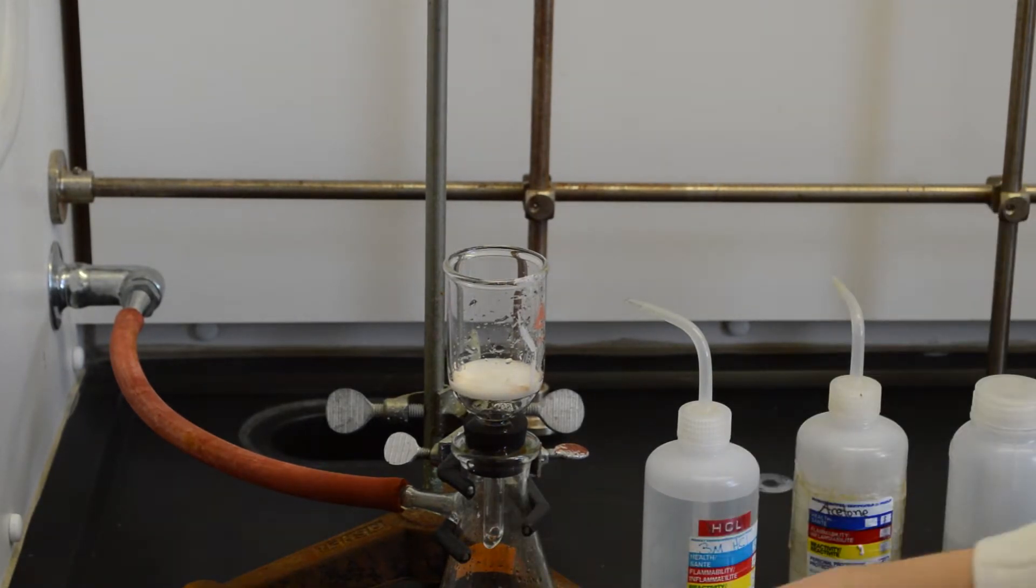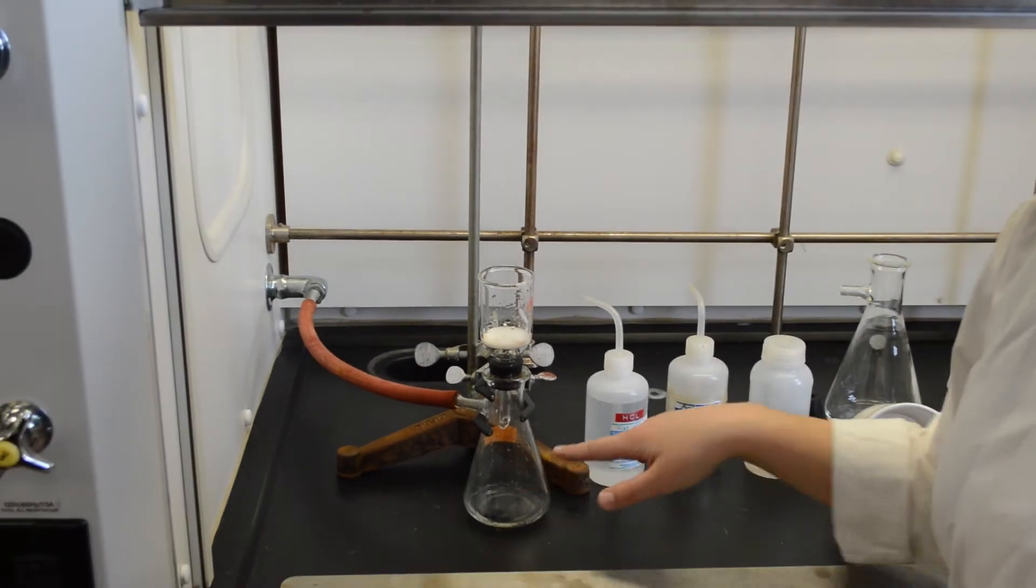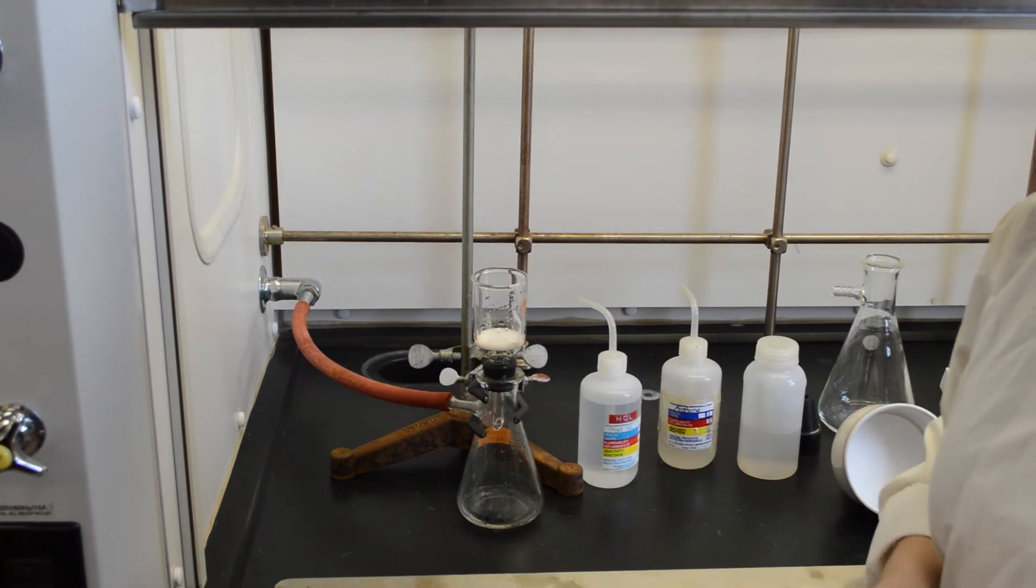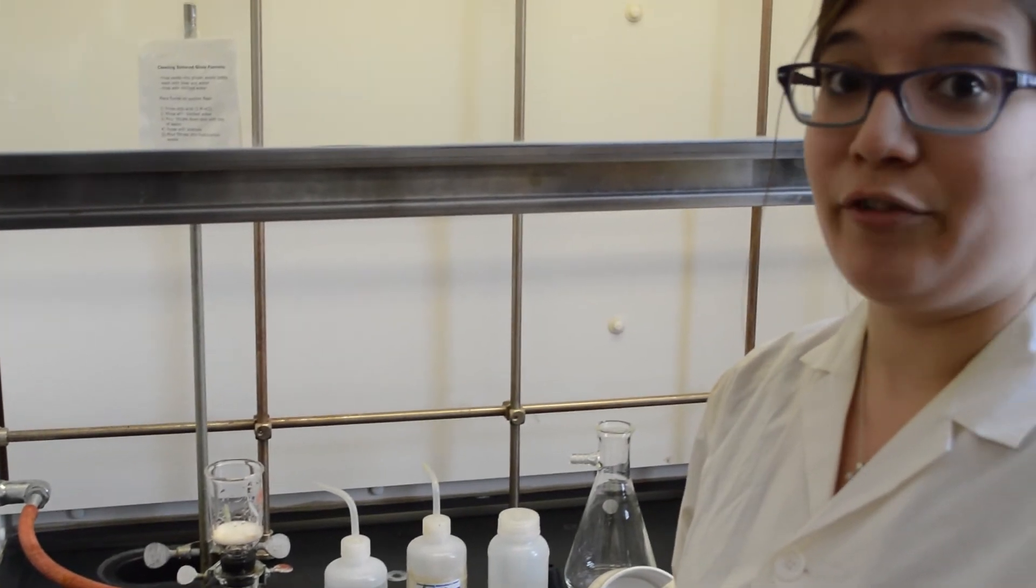At this point you have to take all of your acid waste and dispose of it in the appropriate acid waste bottle. And then you can give the sintered glass funnel a final rinse with some acetone. It's important to make sure that hydrocarbon waste such as acetone and acid waste never mix.